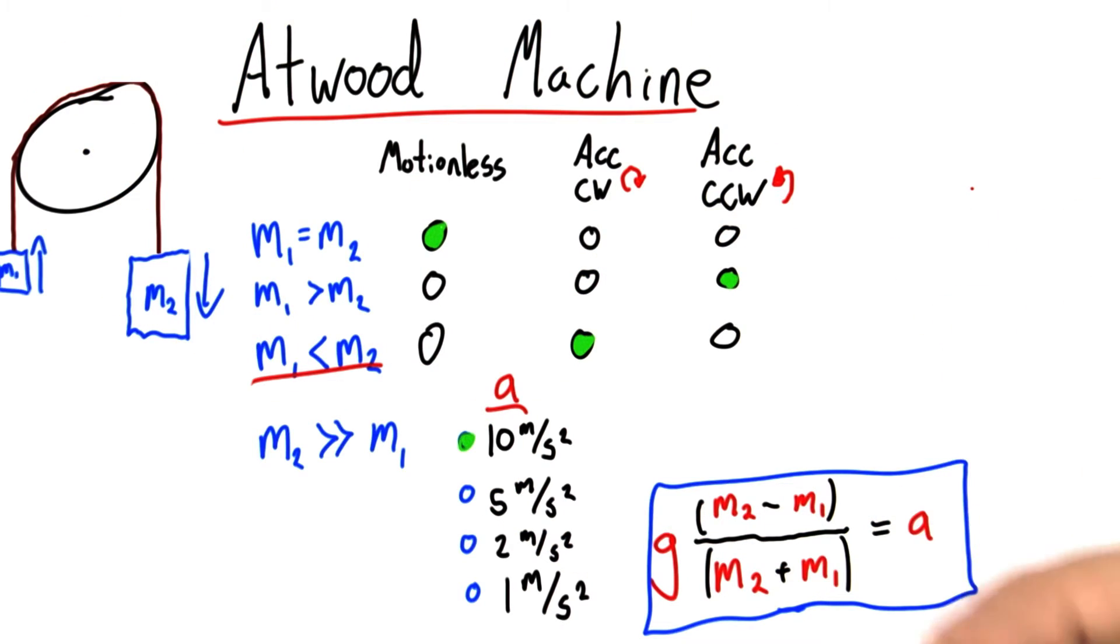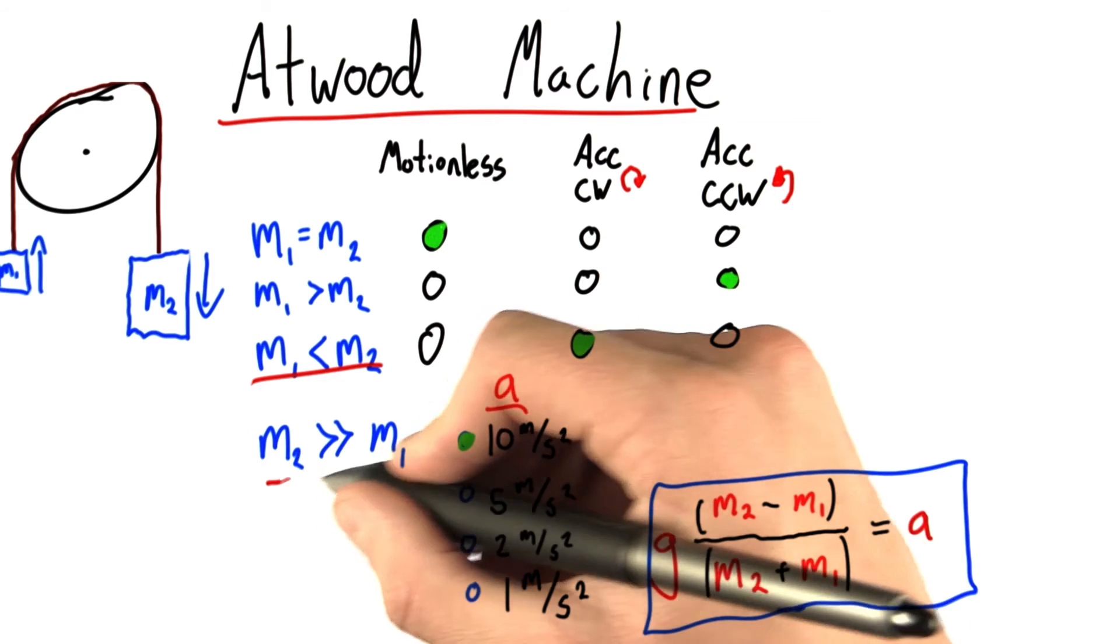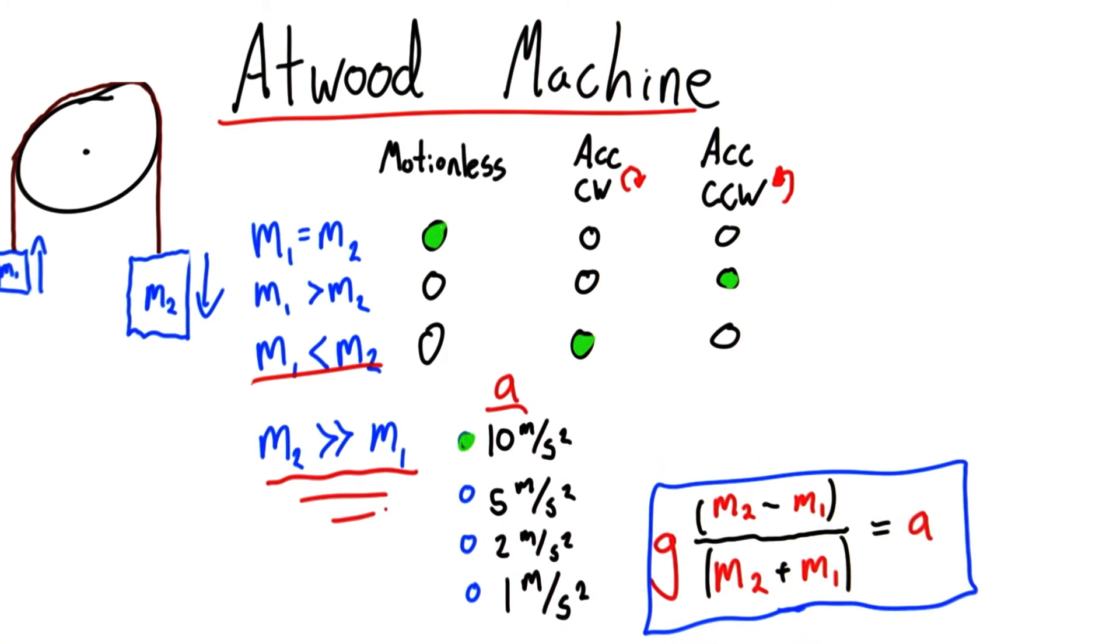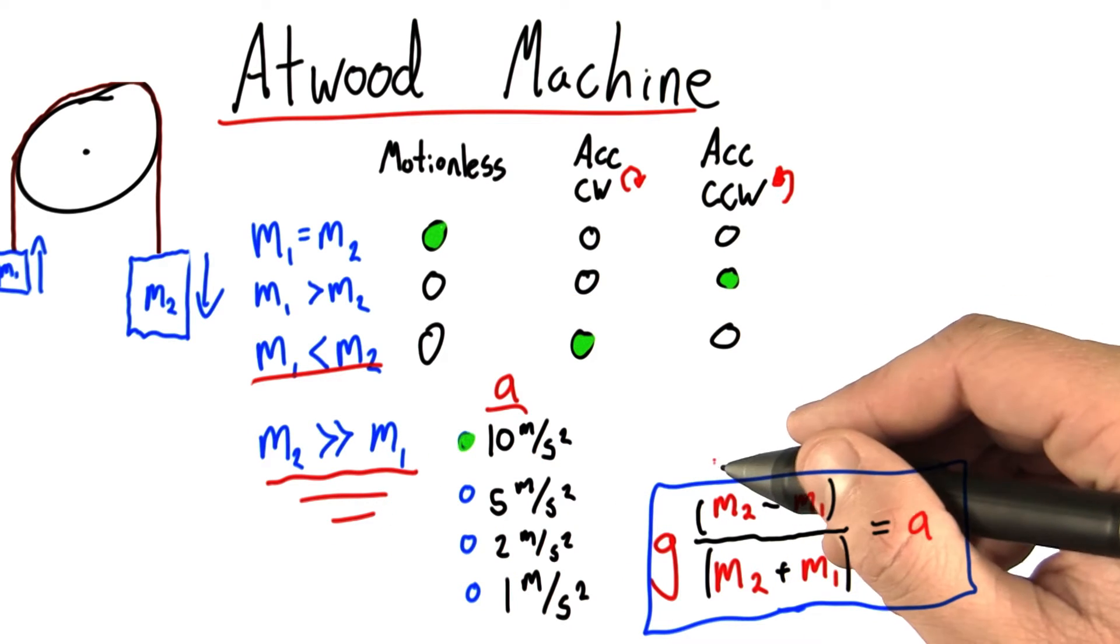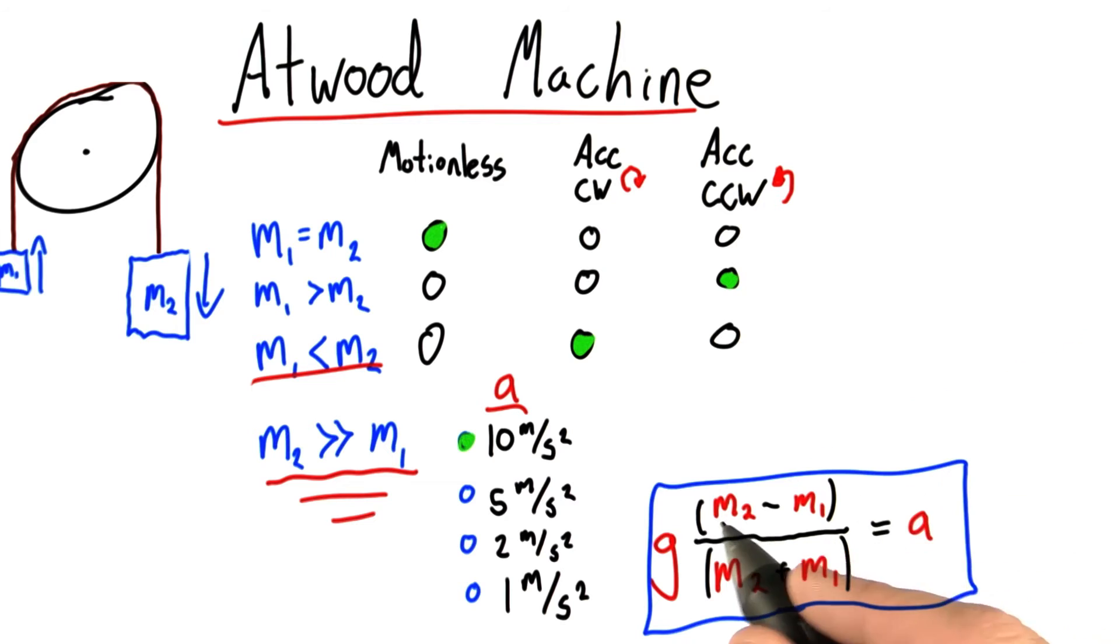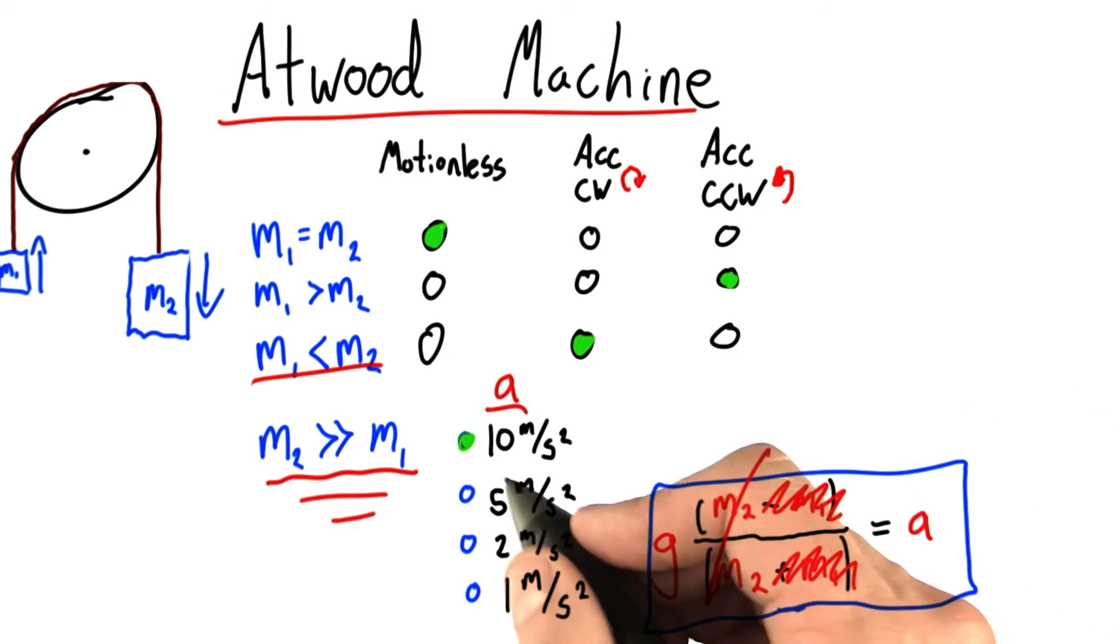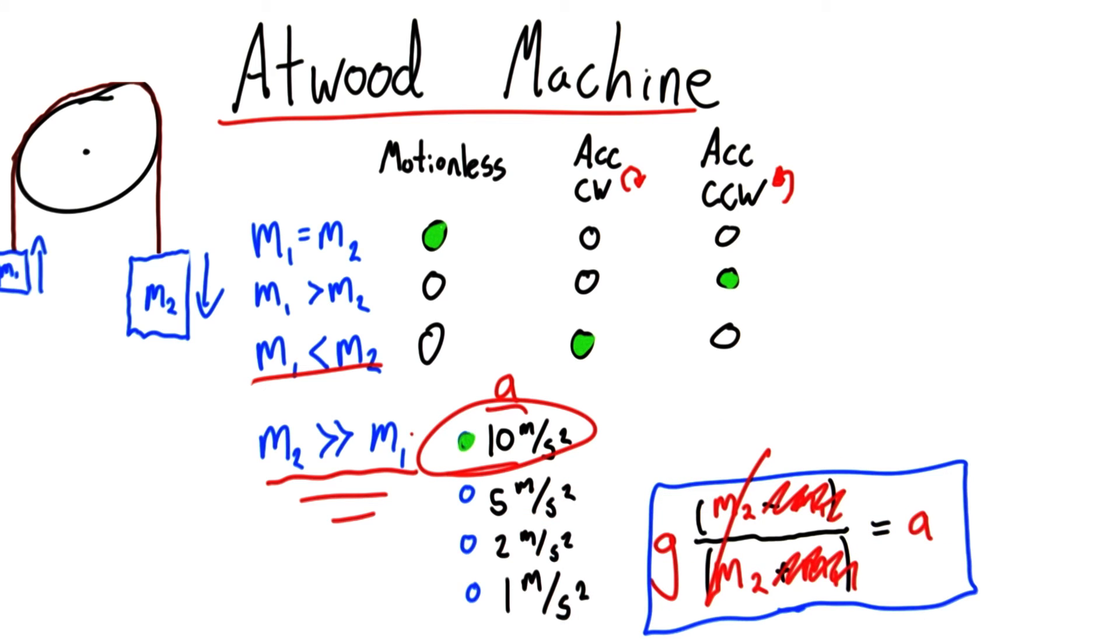And finally, in the case where let's say m2 is much, much bigger than m1, let's say m2 was 1,000 kilograms and m1 was 1. 1,000 minus 1, might as well just call it 1,000 and ignore the 1. Likewise, 1,000 plus 1, who cares about the 1? Ignore it. We have the acceleration is just equal to g times m2 over m2. That cancels. Our acceleration is equal to g, 10 meters per second squared.